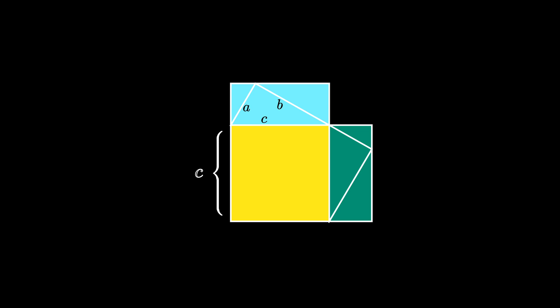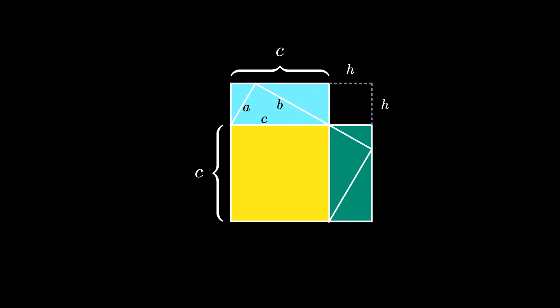We can also fill out the two triangles to rectangles in this manner here. All three of these new shapes — the yellow square, the blue rectangle, and the green rectangle — all have a side of length C. We can use the altitude of the original triangles to then create the final missing square up in the upper right corner here.